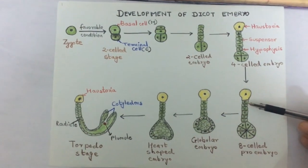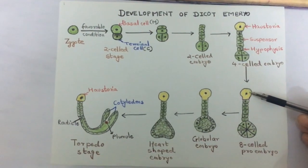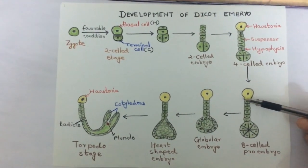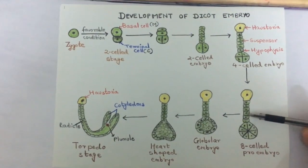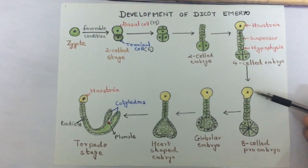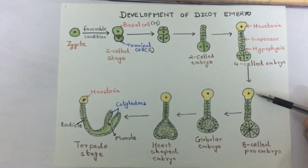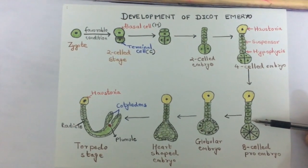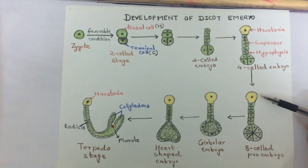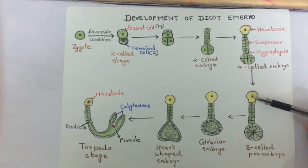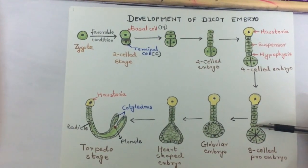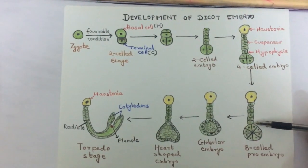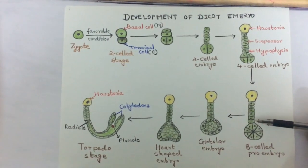The suspensor pushes the embryo cells down into the endosperm. The distal cell of the suspensor is much larger than the other cells — this is called the haustoria. The lowermost cell of the suspensor is called the hypophysis, which gives rise to the embryonic root and root cap.